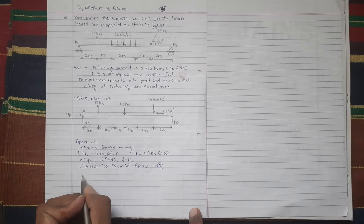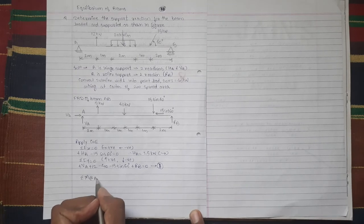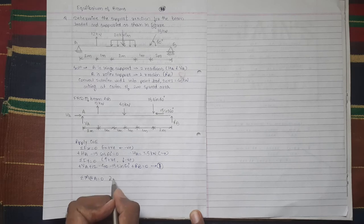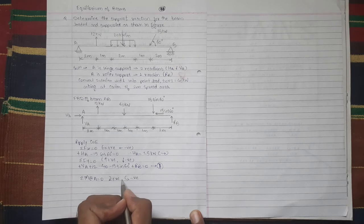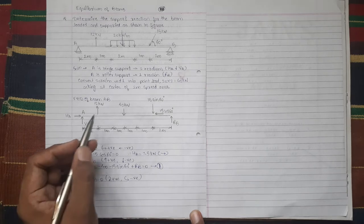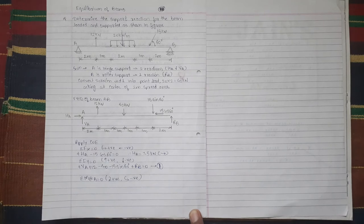Third condition of equilibrium: summation moment of all forces about point A equal to 0. Clockwise moments are positive, anti-clockwise moments are taken negative. So moment of all forces about point A is taken.